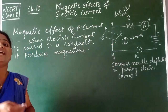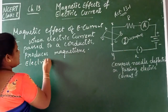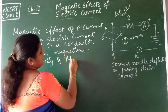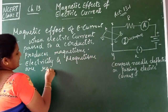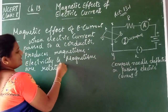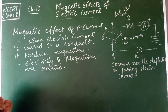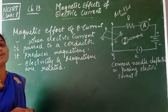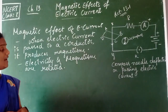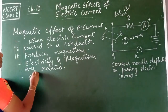We can say that electricity and magnetism are related to one another. The same concept is used in the working of electric motors and electric generators. All such things will be studied in this chapter. Generally, the magnetic effect of electric current is also called electromagnetism.